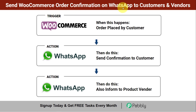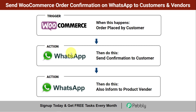Send WooCommerce order confirmation on WhatsApp to customers and vendors automatically. Assume you are selling products of multiple vendors on your e-commerce store and whenever an order is placed by a customer, you want to automatically send an order confirmation message on their WhatsApp, informing them that you have received their order, and at the same time inform the vendor that their product has just been sold from your store. If you want to automate this WhatsApp message sending process, I will show you the whole process step by step.